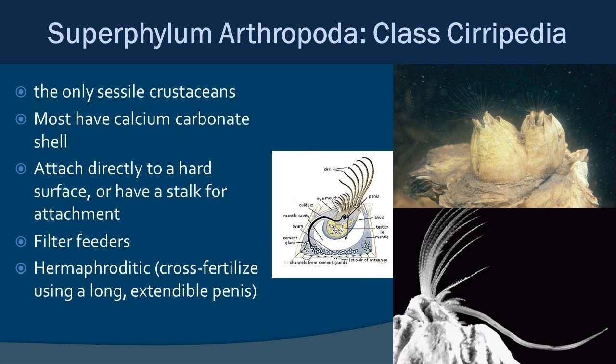Class Cirripedia are your barnacles — the only sessile crustaceans during their adult phase. They generally have a calcium carbonate shell and attach directly to surfaces or via stalks. They are all filter feeders. Interestingly, they are hermaphroditic — having both male and female parts — but they cannot self-fertilize and must cross-fertilize. Males do this with a very long extendable penis that, in ratio to body size, is the longest in the animal kingdom. This is why barnacles settle near each other.